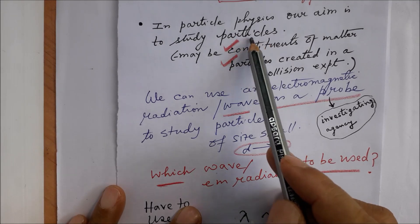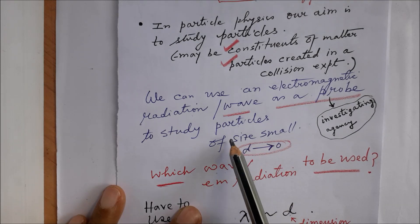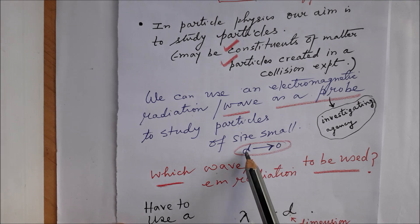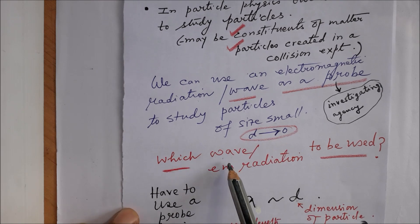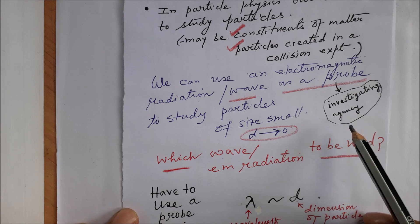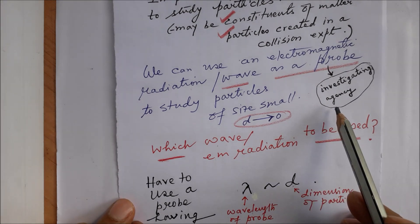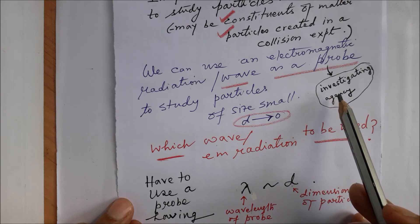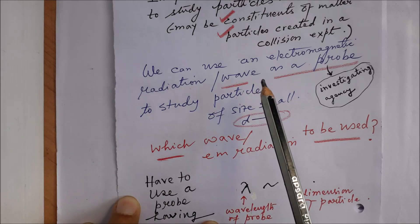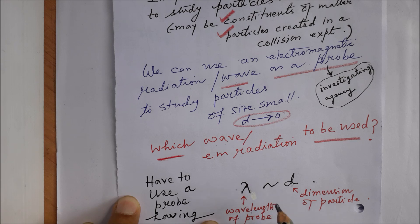And let us re-mention that we are trying to investigate particles, and these particles are of very small size. In other words, their dimension is very close to zero; they are indeed of very small dimension. So the question arises: which wave or which electromagnetic radiation is to be used? What should be the nature of the investigating agency? And the nature of the investigating agency is that its wavelength—the wave or electromagnetic radiation with which we will investigate the particles—should be comparable to the dimension of the particle. So this is the requirement that we set.